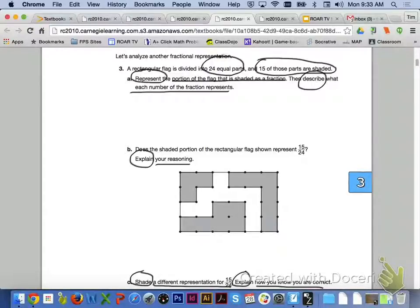Let's look at the top of page 99 and analyze another fractional representation. Take a look at number three. A rectangular flag is divided into 24 equal parts, and 15 of those parts are shaded. What I would like you to do is answer letter A, B, and C with your group members.